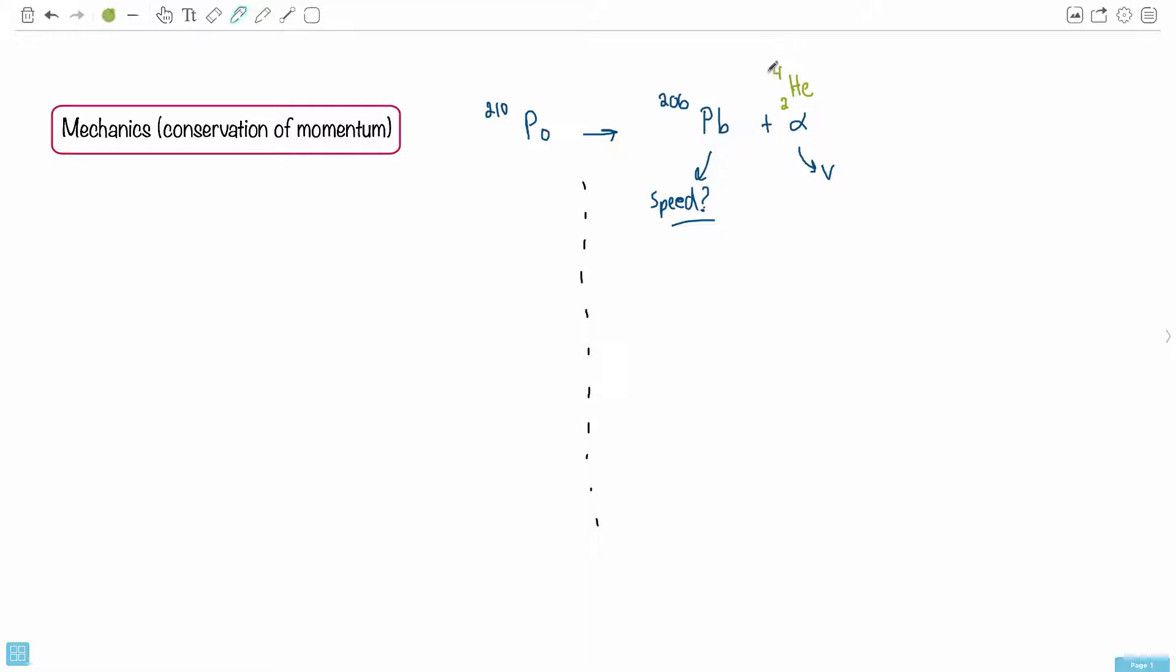So what's going on? Well, because this is stationary and then this thing goes flying, maybe it helps to do a diagram here. I'll draw that in purple. So this right here, we just have polonium-210, and that's it. It's not moving because we're told it's stationary.